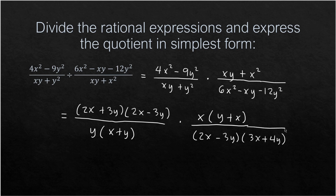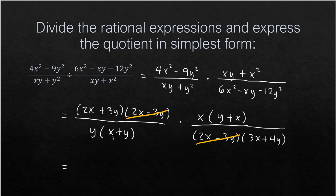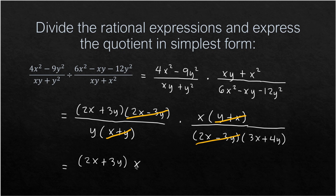We can verify: negative 3 times positive 3 is negative 9, and 2 times 4 is positive 8, so negative 9 plus 8 is negative 1 — confirming the middle term. Now we cancel common factors: (2X − 3Y) cancels, and (X + Y) and (Y + X) are the same by commutativity of addition, so they cancel too.